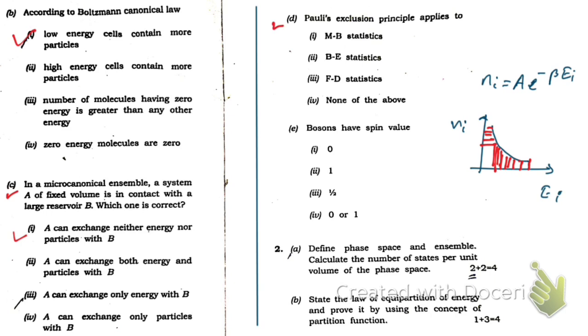Question d: one-dimensional Pauli exclusion principle applies to—this would be number 3, FD statistics.